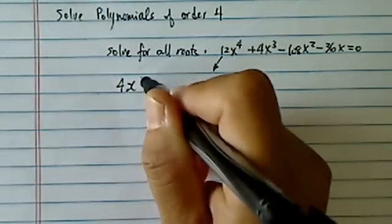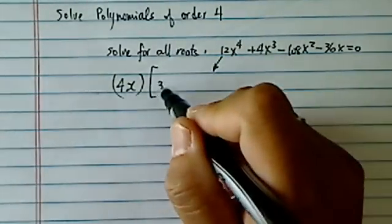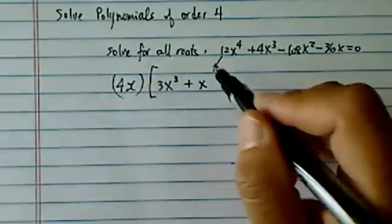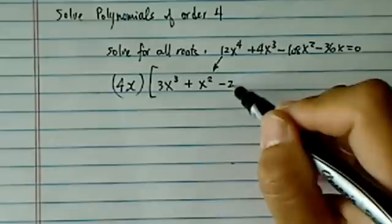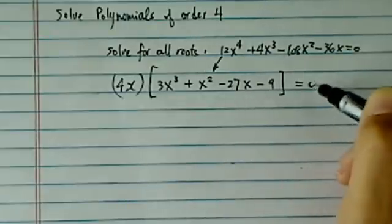Let's make this one look easier, first of all. Let's factor 4x out. So we have 3x³ + x² - 27x - 9 = 0.